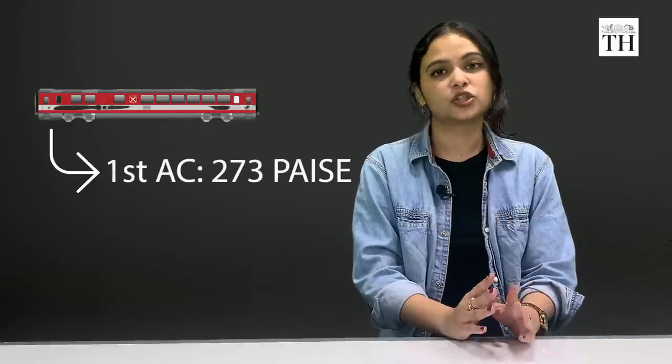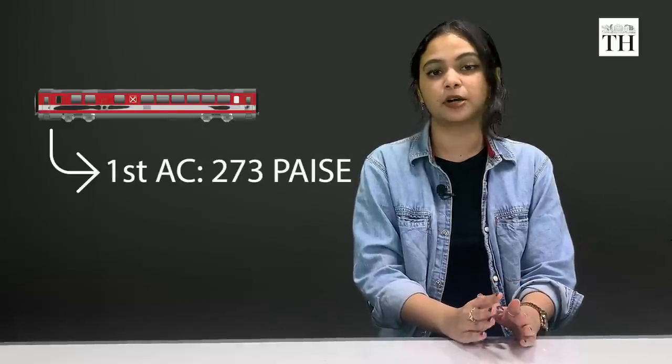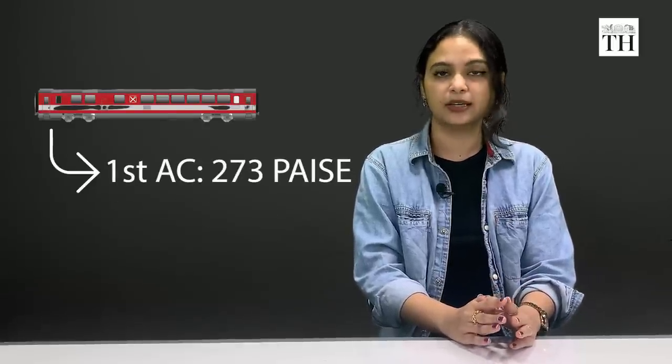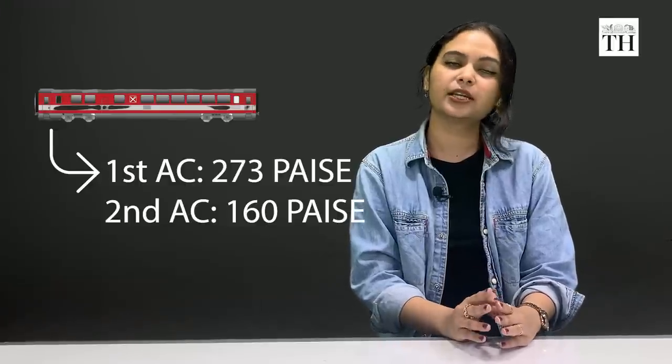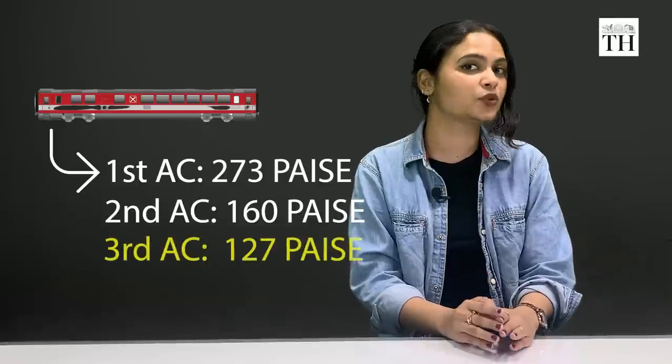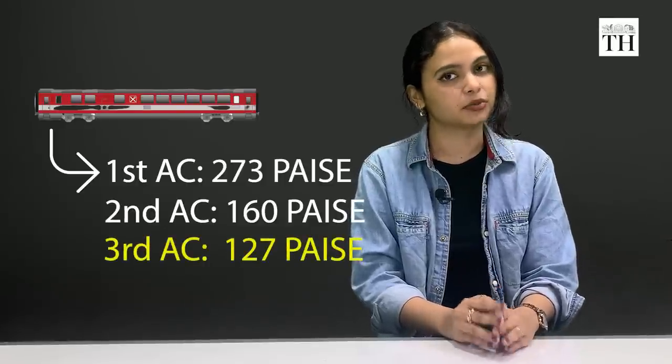And if that wasn't enough, consider this data point. The first AC charges 273 paise per passenger per kilometer. The second AC charges 160 paise. But the third AC's rate is just 127 paise per passenger per kilometer.